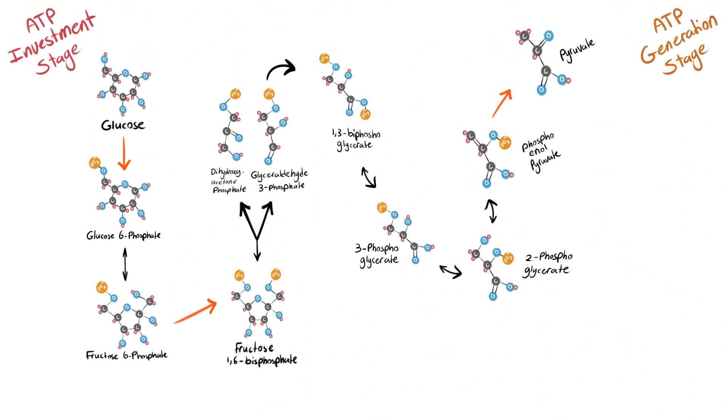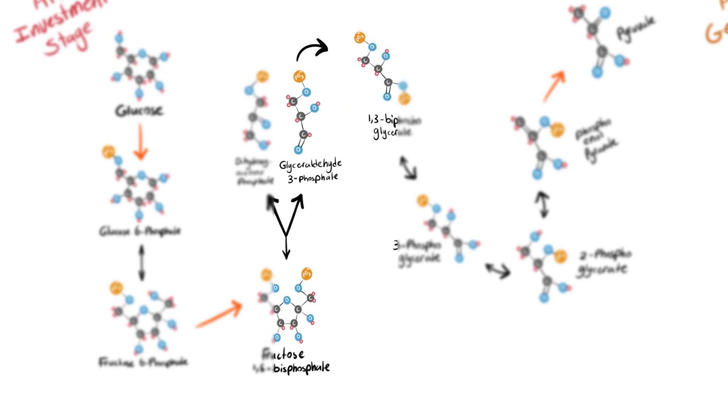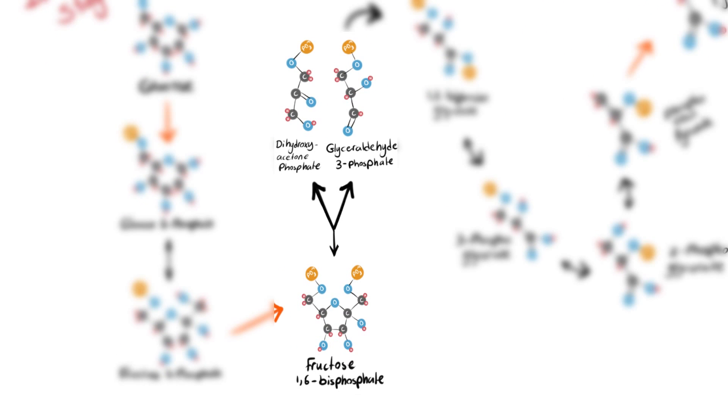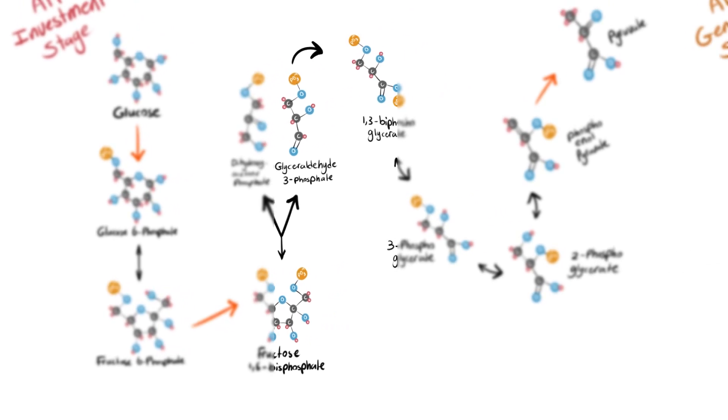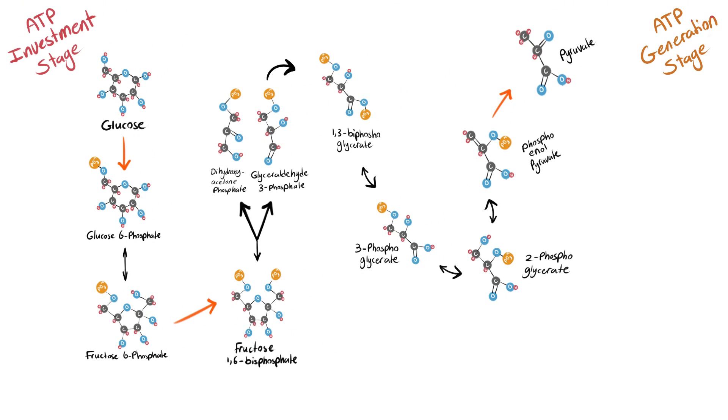The fourth step is catalyzed by the enzyme fructose bisphosphate aldolase, which cleaves fructose 1,6-bisphosphate into dihydroxyacetone phosphate and glyceraldehyde 3-phosphate. These two products are interconverted, and in order to continue in the glycolytic pathway, dihydroxyacetone phosphate must be converted into glyceraldehyde 3-phosphate, which means we'll have two molecules of glyceraldehyde 3-phosphate. Thus, keep in mind that every reaction after this step will occur twice.